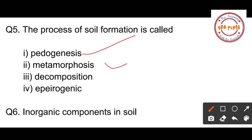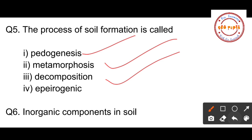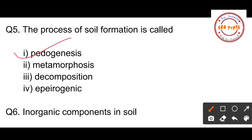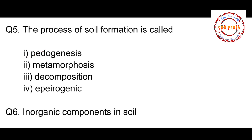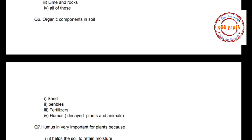Question number five: The process of soil formation is called — pedogenesis, metamorphosis, decomposition, or apurogenic. The process of soil formation is called pedogenesis, so option number one is the correct option. Don't forget it!